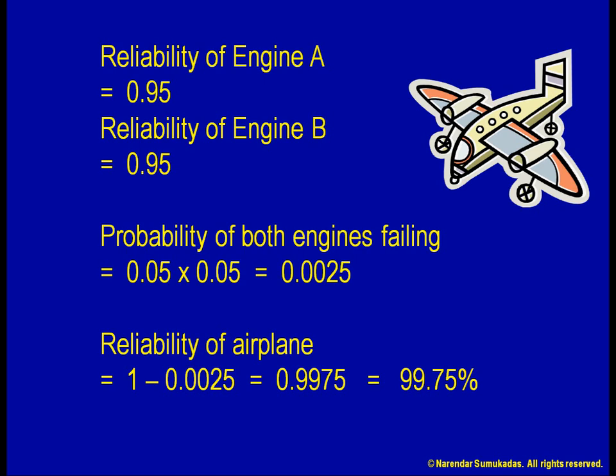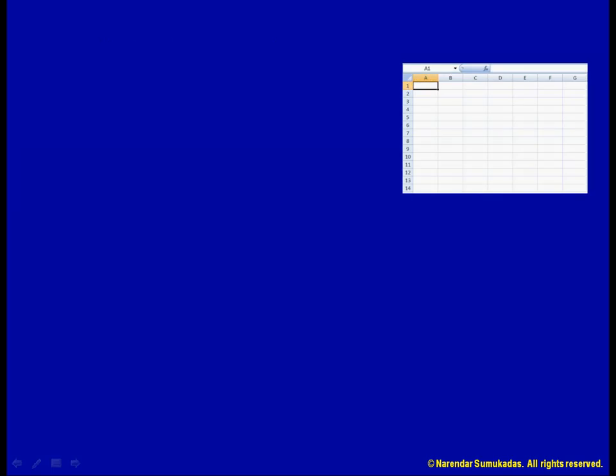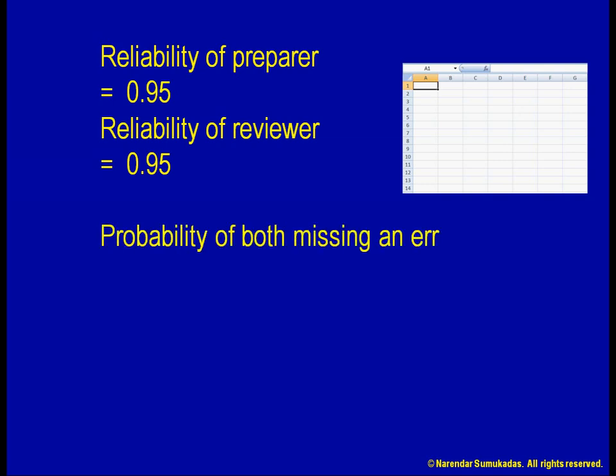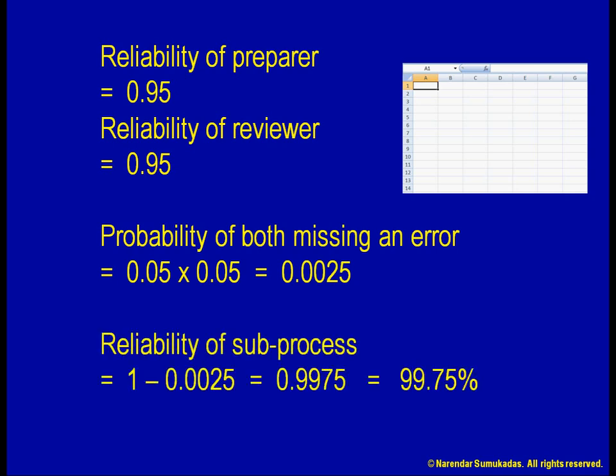Let us apply this redundancy principle to our accounting processes. Let us say the person preparing an Excel spreadsheet is really clumsy and makes one mistake out of every 20 entries. That is, this employee is only 95% accurate. You then assign a colleague who is also as error prone to review the spreadsheet. The chances that both of them will miss an error is 0.25%. Therefore, even with such incompetent employees, the reliability of your sub-process has jumped up to 99.75%.